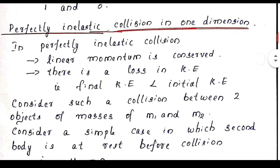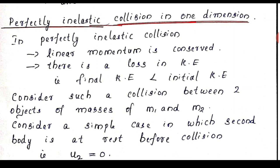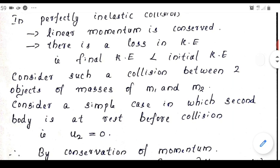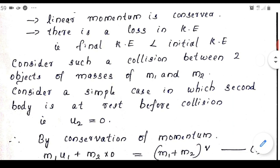Now, perfectly inelastic collision in one dimension. In a perfectly inelastic collision, kinetic energy is not conserved and the two colliding bodies cling to each other and move as a system after the collision. Linear momentum is conserved, but since kinetic energy is not conserved there is a loss in kinetic energy — total kinetic energy after collision is less than before. We will obtain an expression for velocity after collision and for loss in kinetic energy.